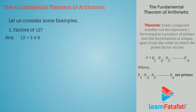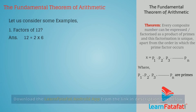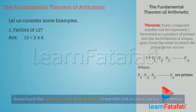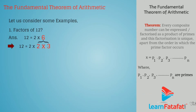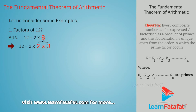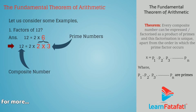For example, calculate factors of 12. 12 can be factorized as 2 into 6. Then again, 6 is simplified as 2 into 3. That is, 12 is equal to 2 into 2 into 3, where 2 and 3 are prime numbers and 12 is a composite number.